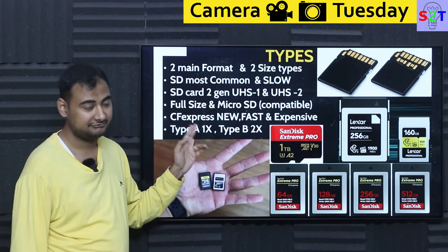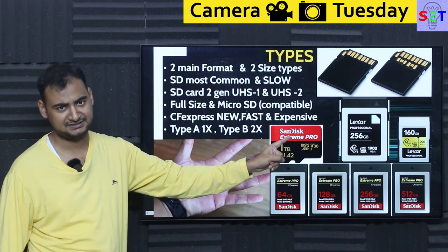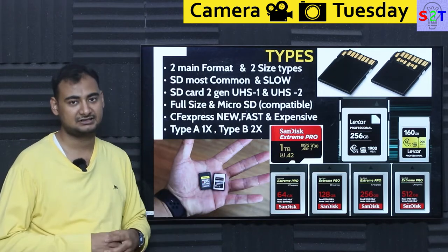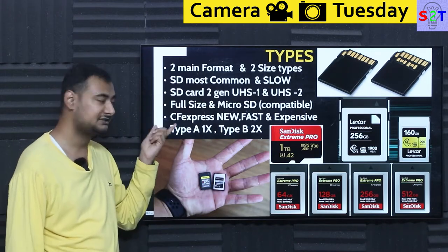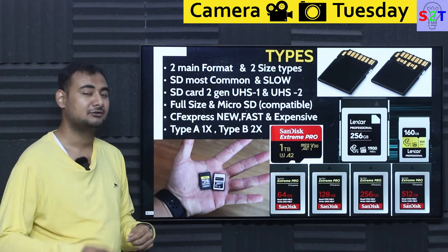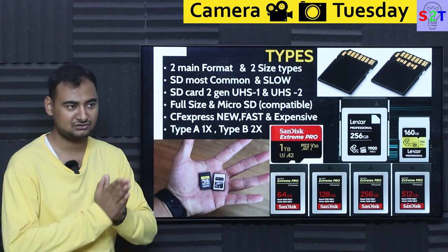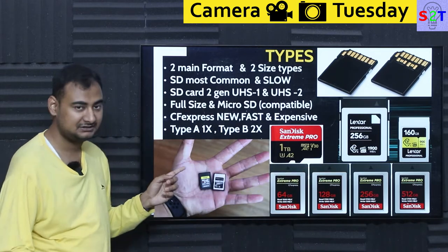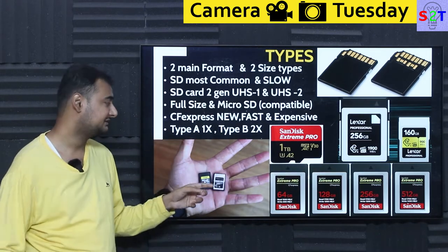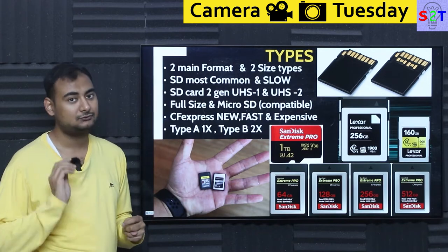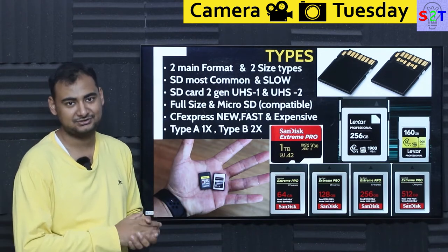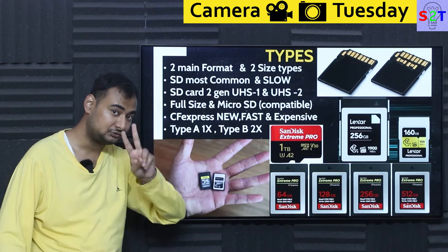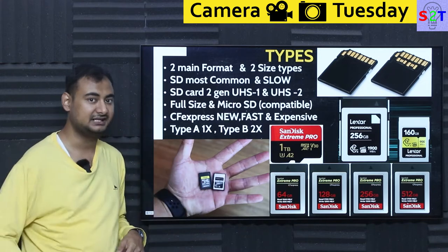Then we come to the granddaddy: the CFast Express system. They are very new, very fast, and idiotically expensive. The CFast Association created three formats: Type A, Type B, and Type C. They are based on the same protocol used by the PC industry — PCI Express. That's why you'll hear Type A called 1x, Type B called 2x, and Type C called 4x, just like PCIe lanes in a computer.